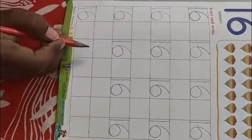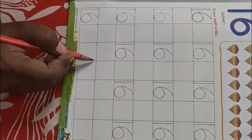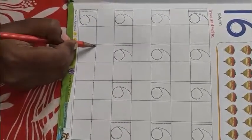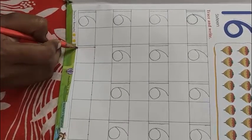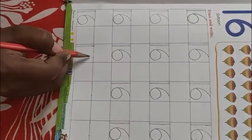Now here two dots are given. First dot we will write one, and second dot we will make six.